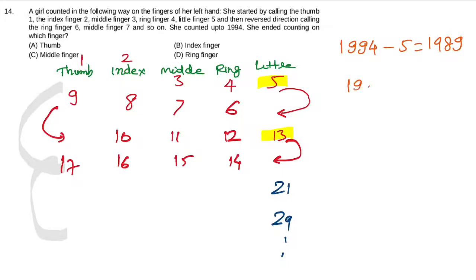If we divide it, we can find the pattern. We divide to get the cycle. The calculation gives us the remainder to find which finger.